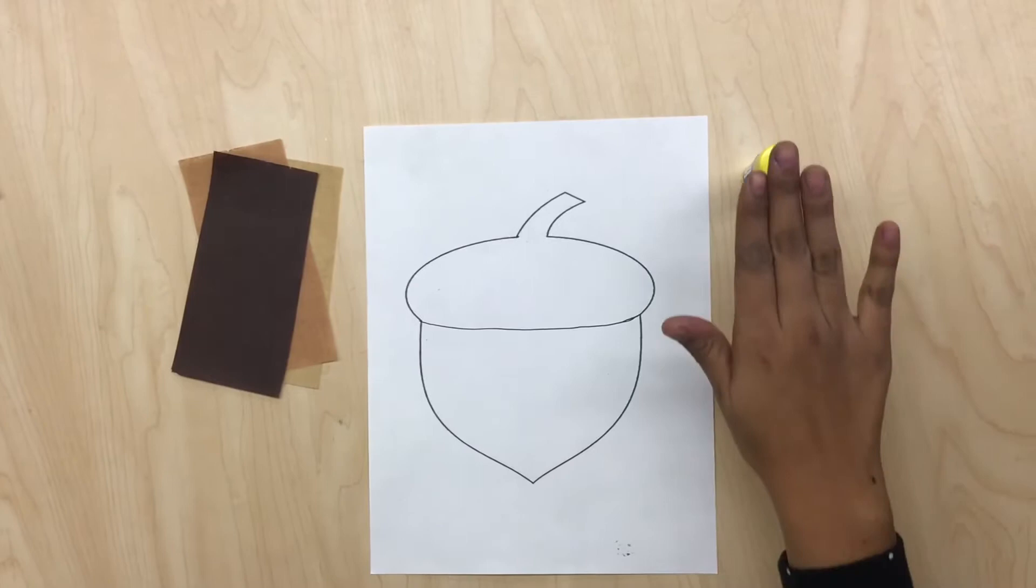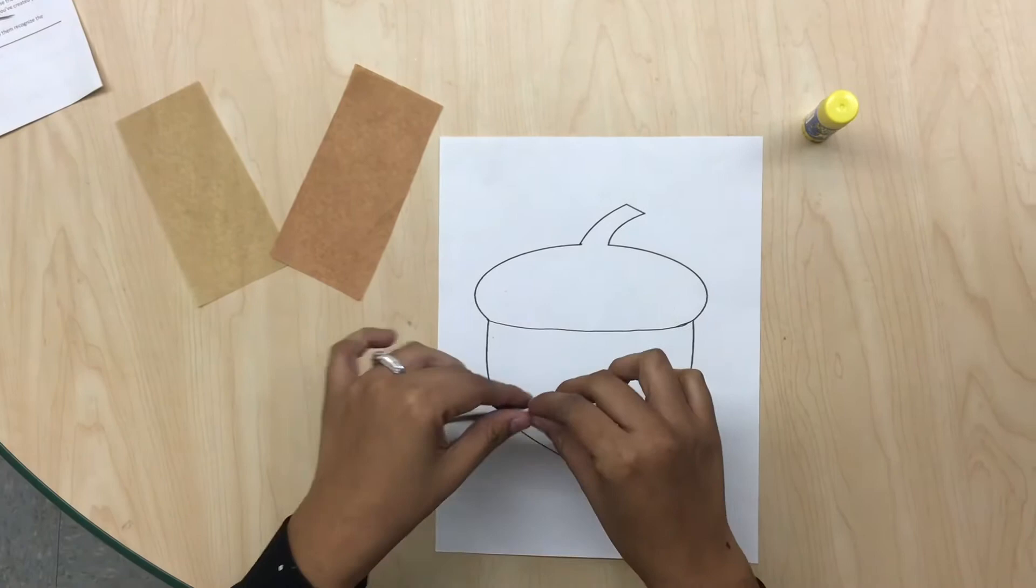The materials that we're going to be using today are white paper with an acorn printout, glue, and tissue paper.